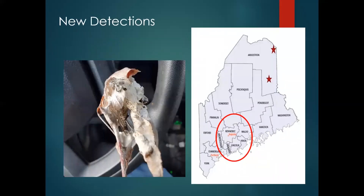Last winter we did have two new detections. The area circled in red is the main bulk of the browntail population in Maine, but we found it in two locations up in Aroostook County — single webs. This speaks volumes to how well it can hitchhike, as you can see how far they are removed from the main bulk.